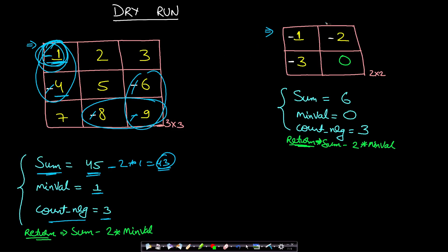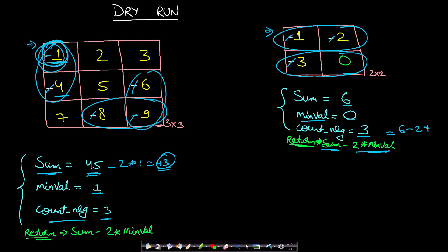In the second example we have three negatives but also a zero. We can pick -1 and -2 and multiply by minus 1 so both become positive. Then pick -3 and 0 and multiply by minus 1, giving 3. The negative count is 3 (odd), the sum of absolute values is 6, and the minimum value is 0. Returning sum minus 2 times minimum: 6 minus 0 = 6.